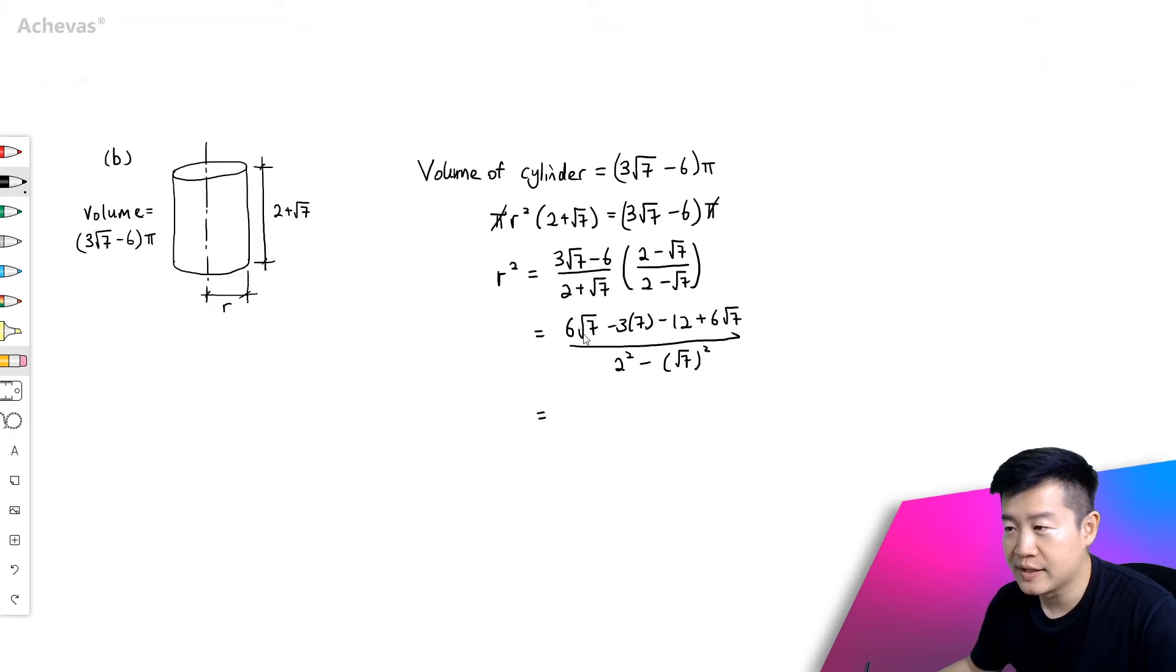So we will have 6√7 + 6√7. This gives me +12√7. And -21 - 12 gives me -33. So this divided by 4 - 7 gives me -3. So r² is going to be equal to -33 + 12√7 divided by -3, which equals 11 - 4√7.